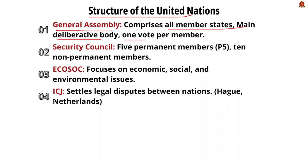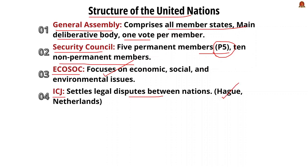Then there is the Security Council, which has five permanent members known as the P5 and ten non-permanent members — 15 members in total. The five permanent members have special veto power. Then there is the Economic and Social Council, which focuses on economic, social, and environmental issues and coordinates specialized agencies like WHO, UNESCO, and others. The International Court of Justice settles legal disputes between nations and is headquartered at The Hague in the Netherlands.